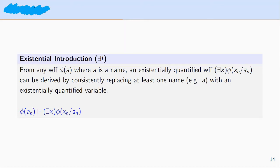The next rule to look at with respect to the derivation rules for predicate logic is existential introduction. Existential introduction says that from a well-formed formula that involves a name — let's call this name A — we can derive an existentially quantified well-formed formula. That existentially quantified formula is the result of consistently replacing at least one name A with an existentially quantified variable.